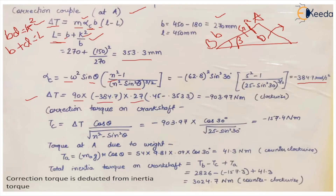The correction couple delta_T = m · αc · b = 90 × αc × 0.27. The quantity (L − L_equiv) is the difference between the actual and equivalent lengths, and this gives the value of delta_T, which acts in the clockwise direction — the same as the crank rotation. The correction torque on the crankshaft is then: delta_T × cos θ / √(n² − sin²θ), and substituting all values gives the correction torque.